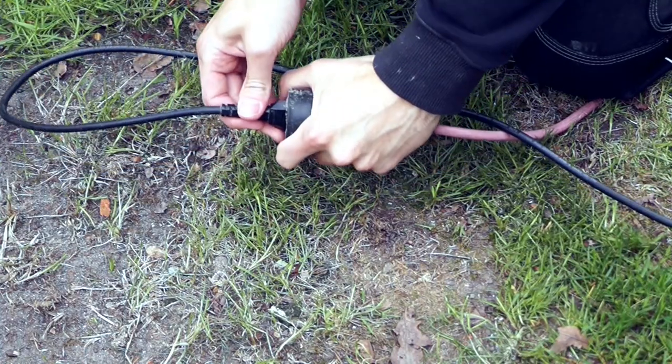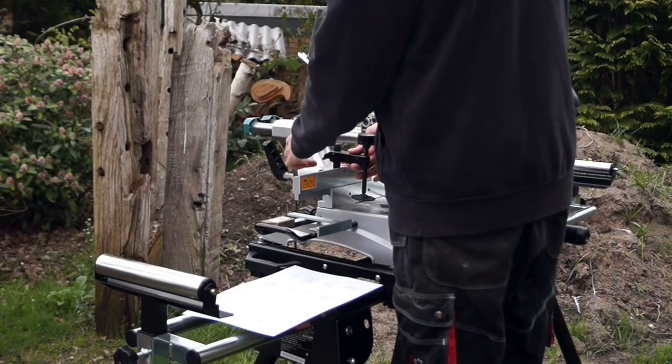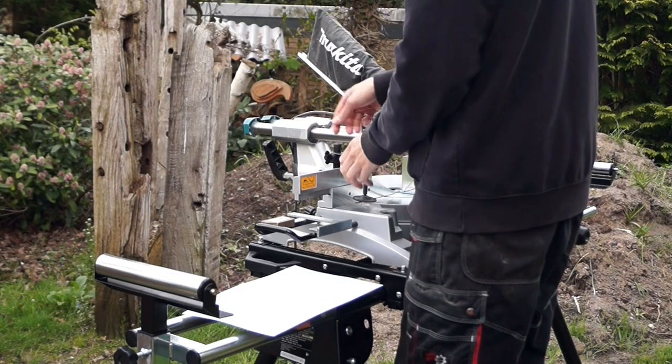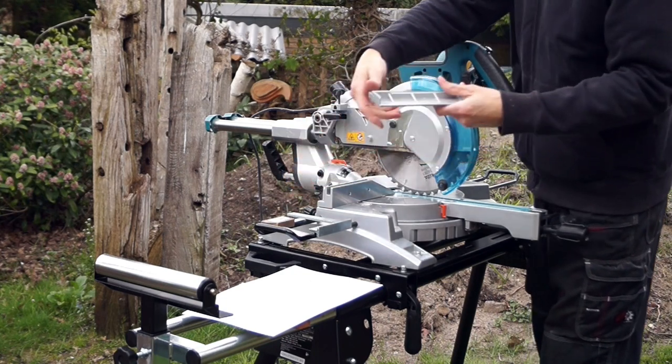First of all, unplug the saw. Then remove all the components of the fence. The screws for that are behind the fence so that no dust can get in.